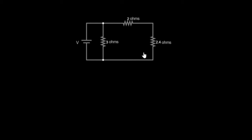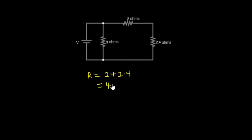Now the circuit has been simplified. From here we can see that the 2 ohms and the 2.4 ohms resistors are in a series connection. So we find their total resistance by adding them: 2 plus 2.4 equals 4.4 ohms. This is the equivalent resistance for those two resistors, and we can represent them with a single 4.4 ohm resistor.